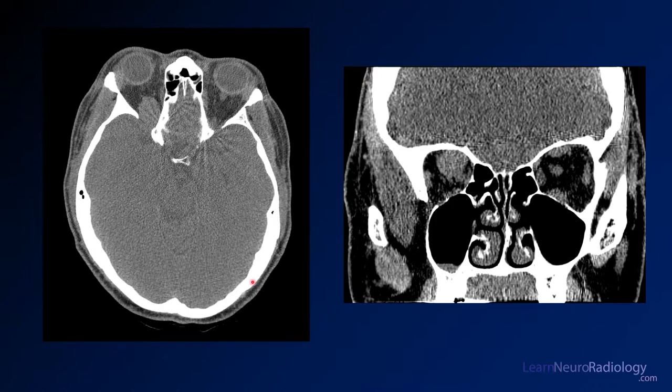Here we have some images from a CT through the orbits. We've got double vision, so we're thinking about orbital abnormalities — take a look at the orbits.